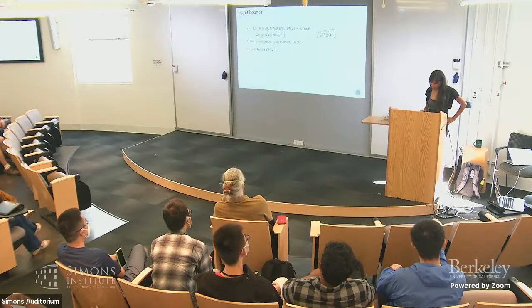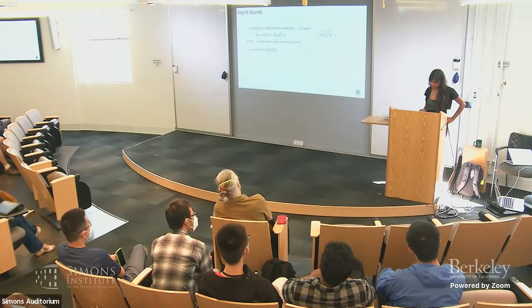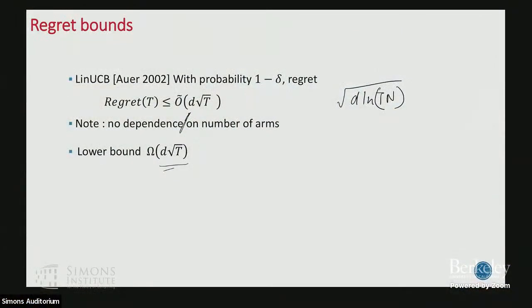There is also a lower bound for this setting. I believe the lower bound is square root of D times T for the finite arm case. For the infinite arm case, you still get square root D times T regret — not log T. If you have a finite N you can get an improvement of a factor of square root D, like substituting N by exponential in D.